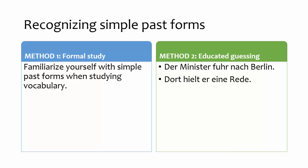The second method is to make smart guesses. In the examples on your screen, you might be able to use context clues and the spelling of the verb to guess that "fuhr" is the simple past of "fahren." "Fuhr" shares three letters — F, H, and R — with its infinitive form.